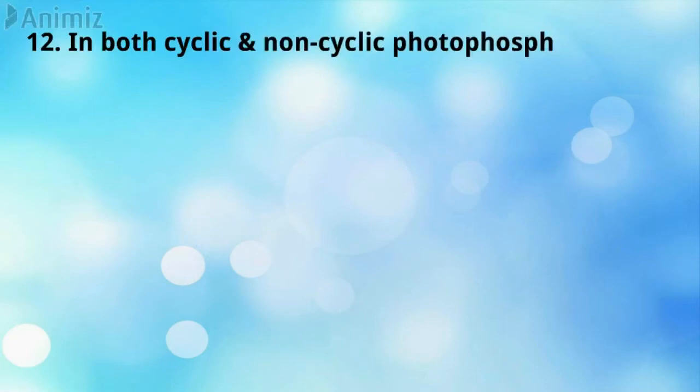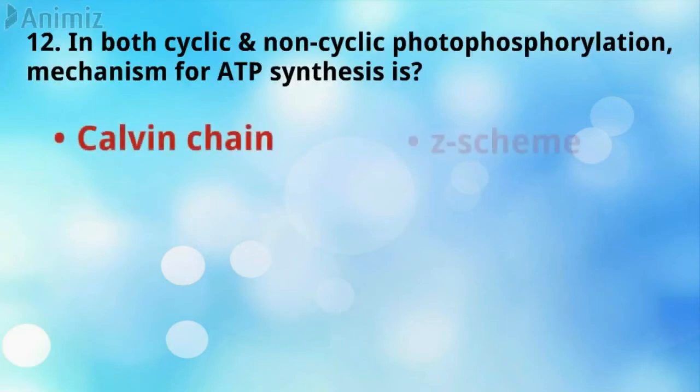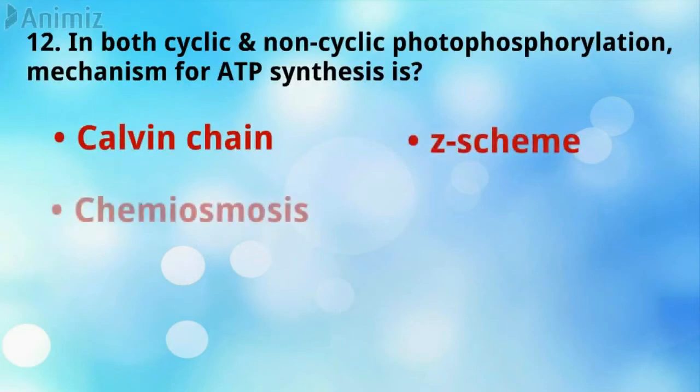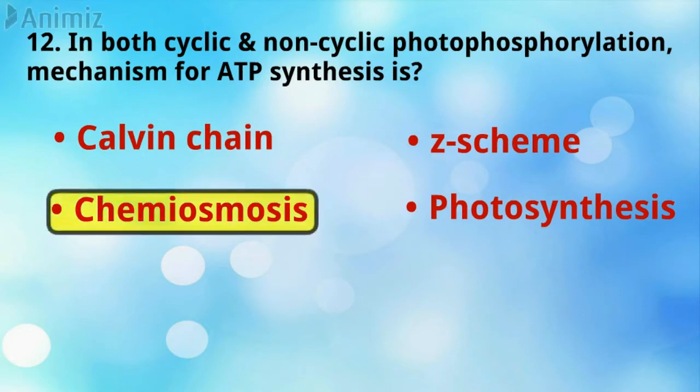In both cyclic and non-cyclic photophosphorylation, the mechanism for ATP synthesis is chemiosmosis — that is the correct answer.